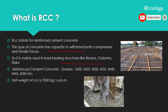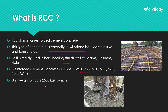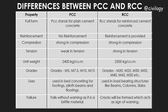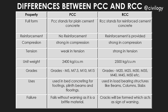For RCC structures, grades above M20 are typically used. The unit weight of RCC is 2500 kg per cubic meter. From all these descriptions, a summary table has been prepared — you can take a screenshot — which shows the simple differences between PCC and RCC. Thank you for watching the video, and please subscribe.